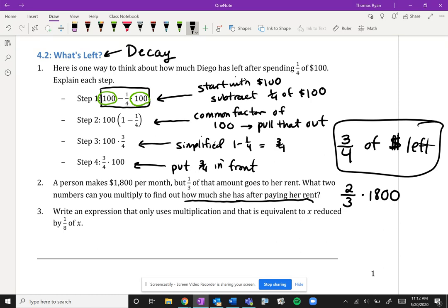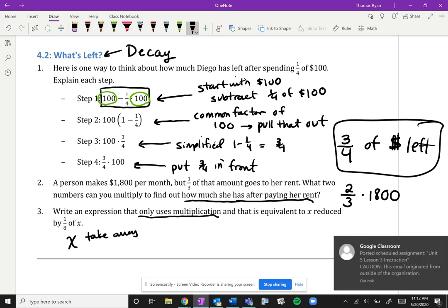So number three says write an expression that uses multiplication, only uses multiplication, that is equivalent to x reduced by one eighth of x. So we're really saying x and we want to take away an eighth of x.